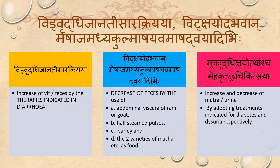Mutra Vridhi Chayod, Dhamshcha, Meha, Kricchrata, Chigalzaya. Increase and decrease of Mutra (urine) are managed by adopting treatment indicated for Meha (diabetes) and Dysuria (Kricchrata). For increase of Mutra, we use Meha Chigalzaya treatment. For decrease of Mutra — Kricchrata — we use Dysuria or Mutra Kricchrata treatment.